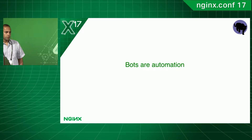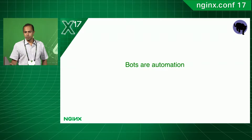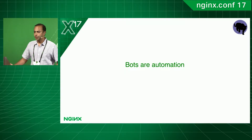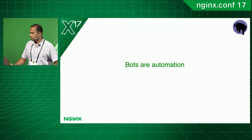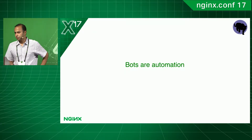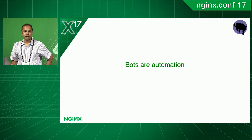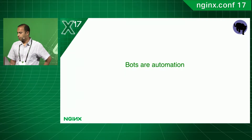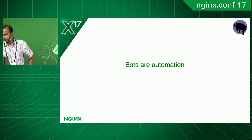We probably all know bots are automation, but not all automation is bad. I just want to walk through some examples of different kinds of automation that we see on our site and how we deal with it.